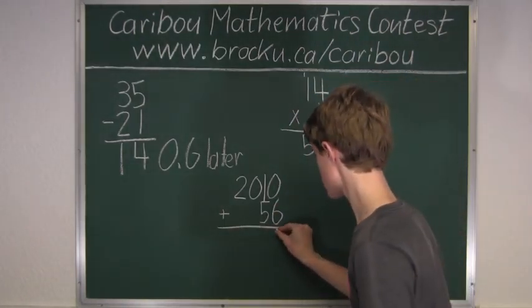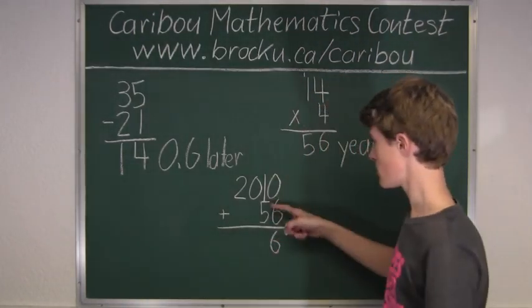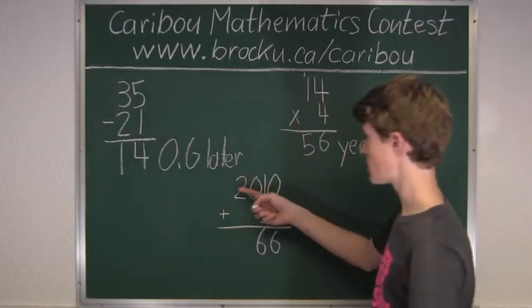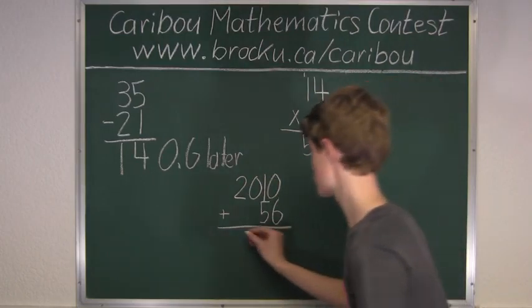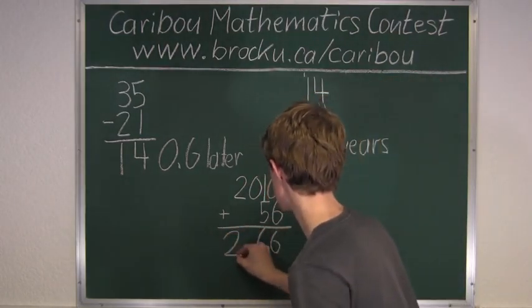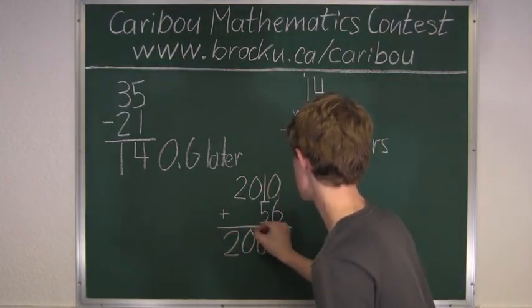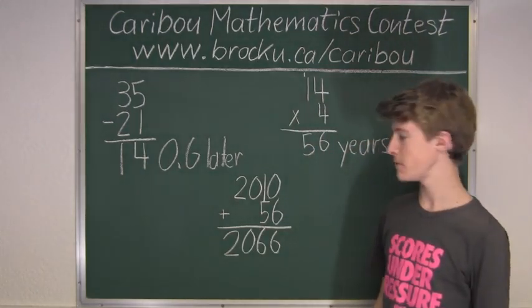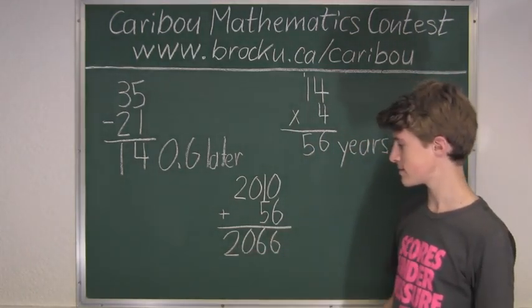0 plus 6 is 6. 1 plus 5 is 6. And then you bring down the 2 and the 0. So we know that the 35th Winter Olympics will be held in 2066.